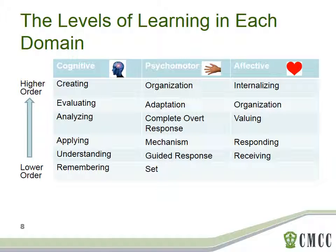Bloom also identified that there are different levels of learning in each of these domains. At the bottom of this chart are the lower order skills for each domain of learning. As learners expand their understanding of the topic, they'll be able to move from lower order skills to the higher order skills. There's a great resource on Cairo called Writing Learning Outcomes, which was written by the British Columbia Institute of Technology. On pages five through seven, they've created charts that look at each of these domains of learning and the various levels, and provided examples of verbs that we can use to represent the different levels of learning in our learning outcomes.